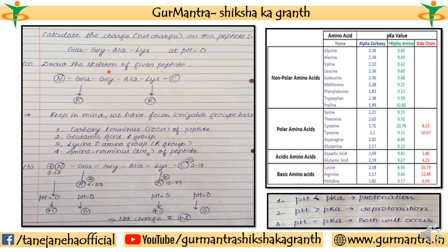First we have to draw the skeleton form of the peptide structure. We don't need to draw the whole structure — we don't have enough time for that. So go for this kind of skeleton structure. We have glutamic acid, glycine, alanine, and lysine taking part in bond formation. Now what you need to keep your attention on is the side chains, and also the alpha carboxy and alpha amino groups.